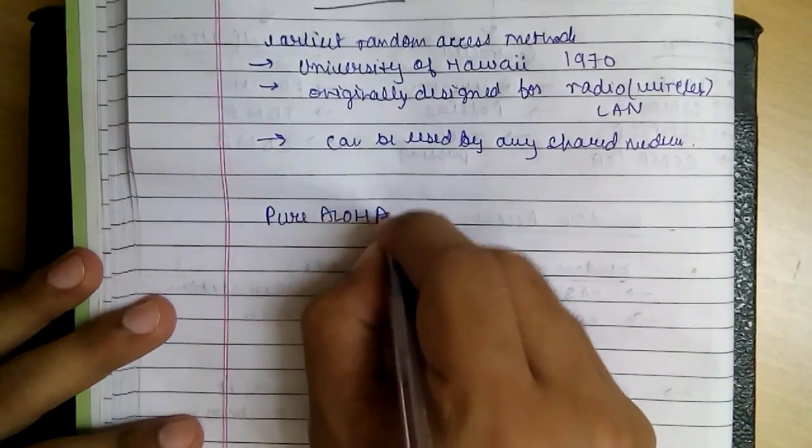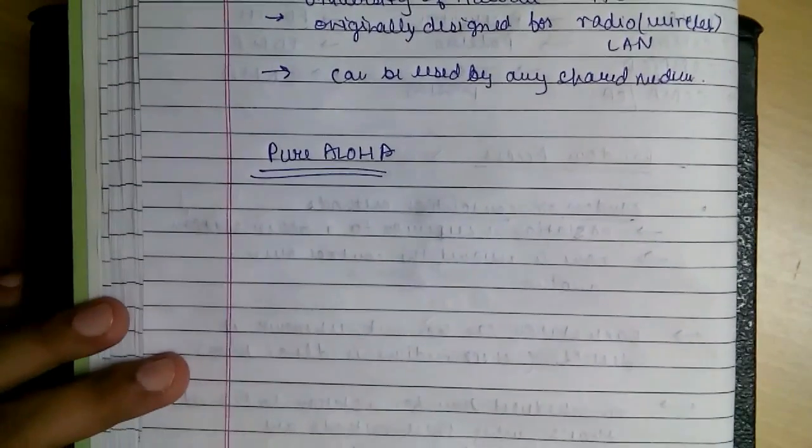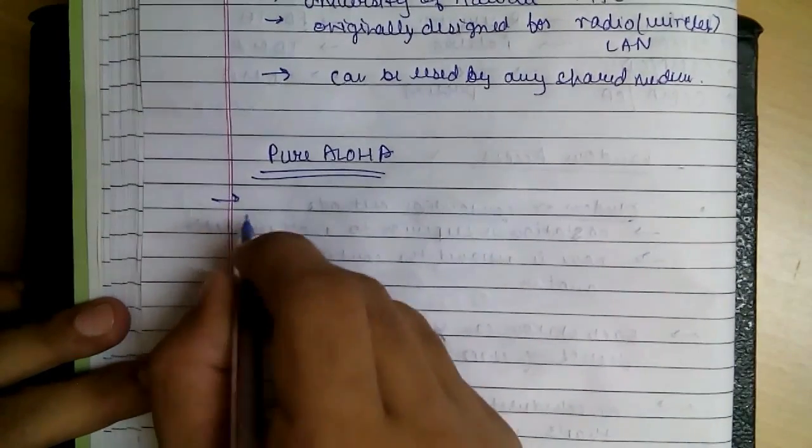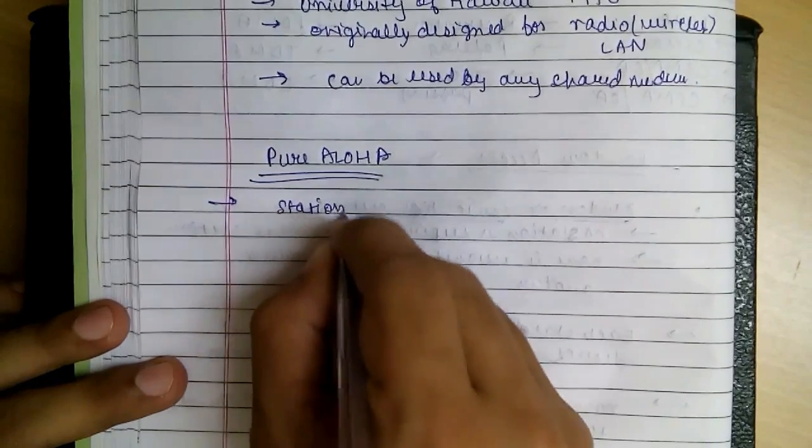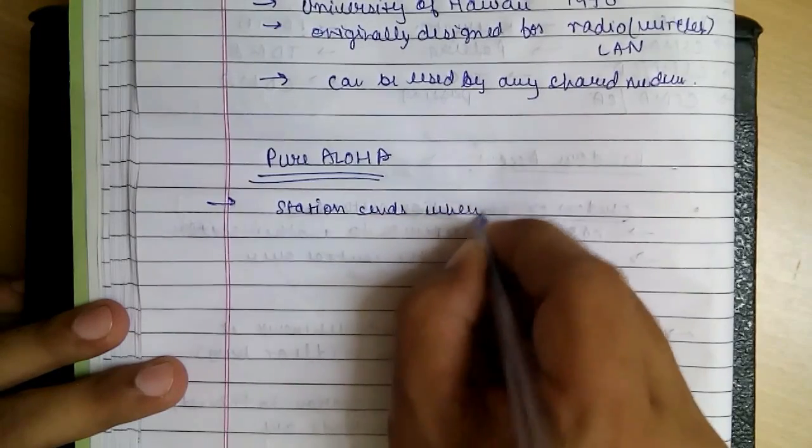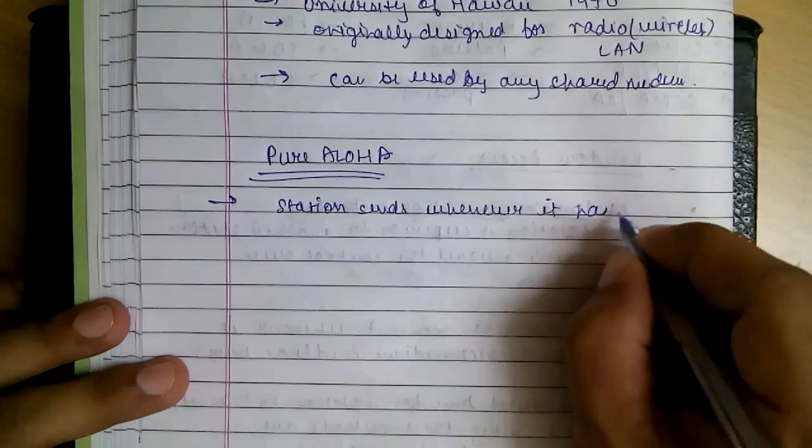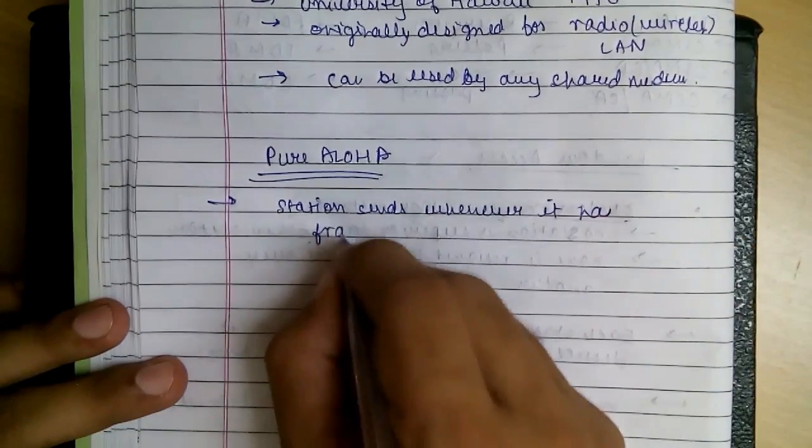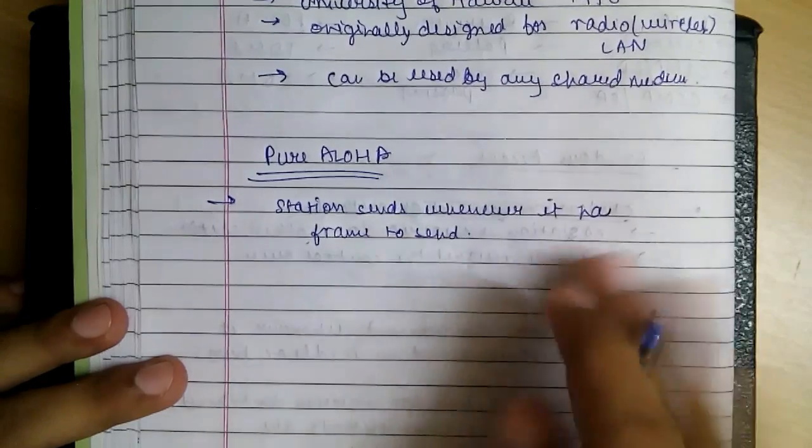The original protocol is known as pure Aloha. The idea in this protocol is that the station sends whenever it has a frame to send.